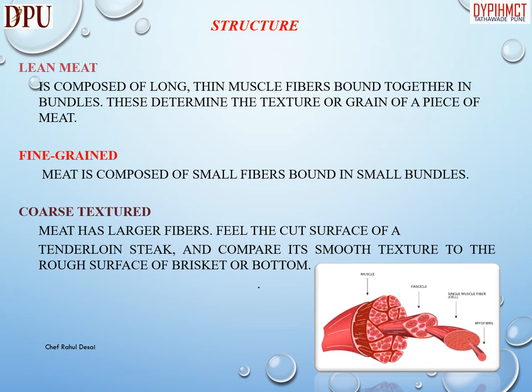Structure of meat: lean meat is composed of long, thin muscle fibers bound together in bundles. These determine the texture or grain of a piece of meat. Fine-grained meat is composed of small fibers bound in small bundles, while coarse-textured meat has larger fibers. Feel the cut surface of a tenderloin steak and compare its smooth texture to the rough surface of brisket or bottom round.